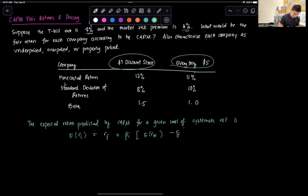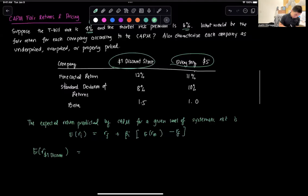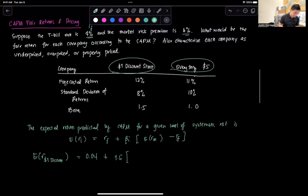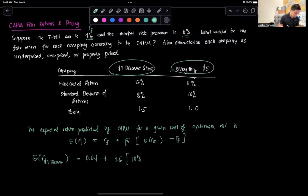So for example, let's now compute the expected return of the Dollar Discount Store. The risk-free rate, the T-bill rate, is 0.04, plus the beta for that is 1.5, and then we're multiplying it to the expected return of the market. That expected return is going to be 10%, minus the risk-free rate which is 0.04. So this 10% is 0.10 and then 0.04. This is equal to 0.13 or 13%.